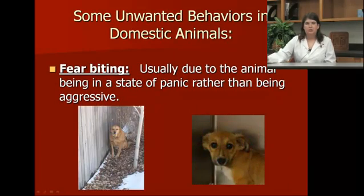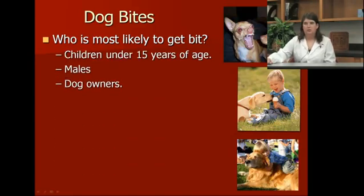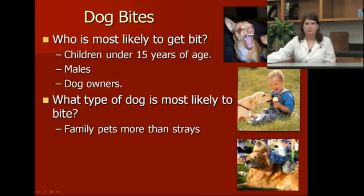Some unwanted behaviors in your domestic animals — the first is fear biting. Dogs and cats a lot of times don't bite because they're mad or aggressive; they bite because they're scared. Dogs can bite because they're either scared or aggressive. Who's most likely to get bit? Children under the age of 15, males, and dog owners are most likely to be bitten. The type of dog most likely to bite is actually family pets more than stray animals, because we spend more time with family pets. Scared dogs are more likely to bite than relaxed, happy dogs, and aggressive dogs are of course more likely to bite.